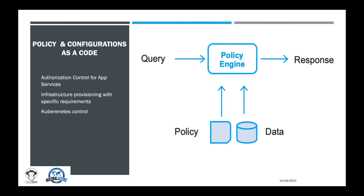Let me give you some examples of real-life use cases which include policies. For example, authorization control for application services — what we call role-based access control to resources deployed within your environments — is one of the most common use cases for policy as a code. To check authorization, a service makes an API call to the policy engine to output whether the request is authorized or not.